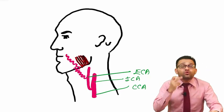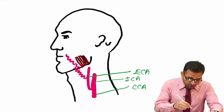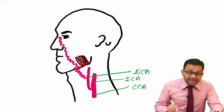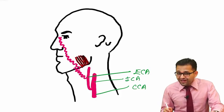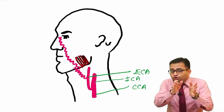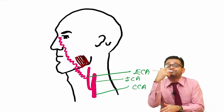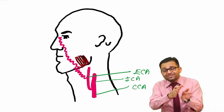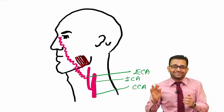This artery is used by anesthetists for the palpation of vitals during surgery. That's why the facial artery is also considered the anesthetist's artery. This artery runs with a zigzag course, 1.2 cm lateral to the angle of the mouth, then running along the lateral part of the nose, ending at the medial angle of the eye.